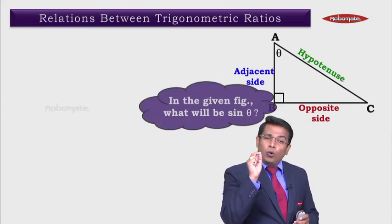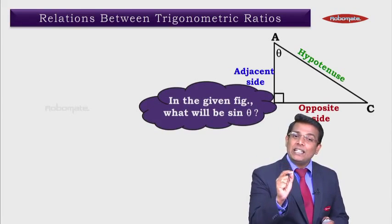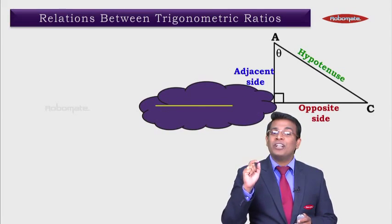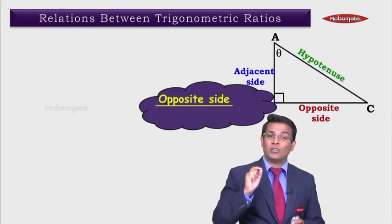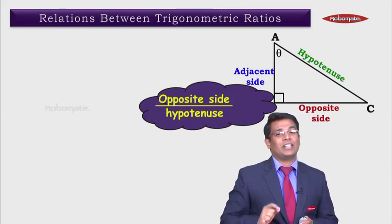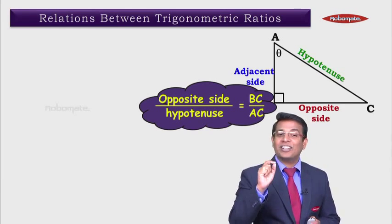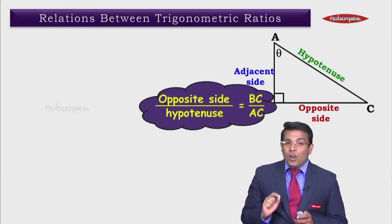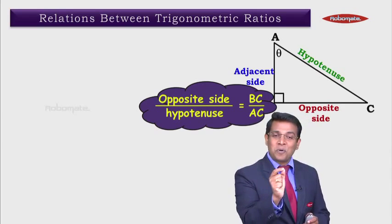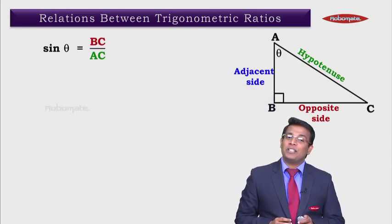Now, in this given figure, what will be sine theta? We know sine is nothing but opposite upon hypotenuse — the opposite side upon the hypotenuse. The opposite side here is BC and the hypotenuse is AC. So in this figure, sine theta is equal to BC upon AC.